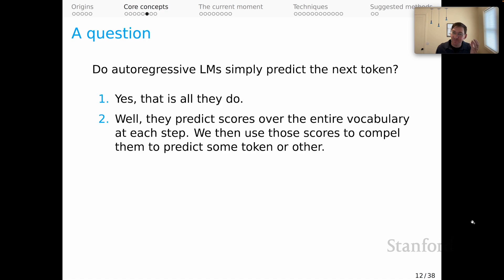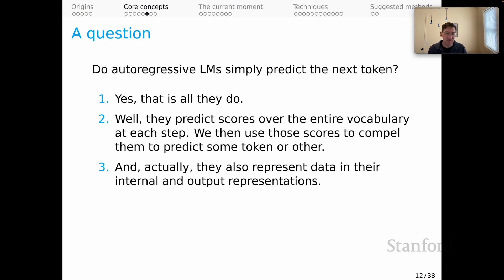However, we just saw that it's more precise to say that they predict scores over the entire vocabulary at each time step, and then we use those scores to compel them to predict some token or other. We compel them to speak in a particular way, and that feels more correct at a technical level. And you might reflect also that they actually represent data in their internal and output representations. And very often in NLP, it's those representations that we care about, not any particular generation process. And that just points to the fact that autoregressive LMs do a lot more than just speak, so to speak.